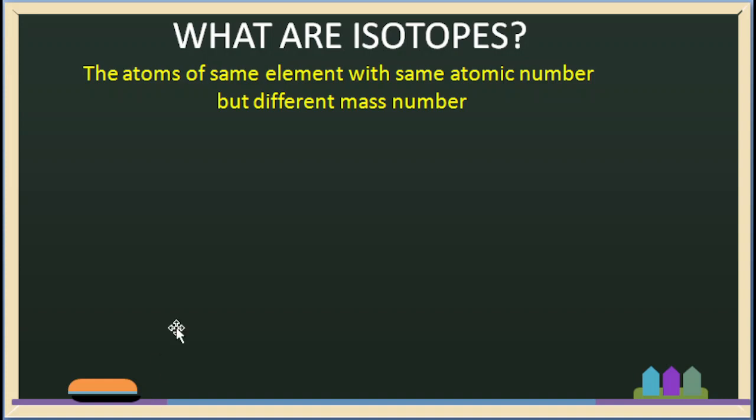Hello. Last video was called 'Atom' — atom properties: atomic number, number of electrons, number of protons, number of neutrons. Today we are going to talk about a very interesting topic. The topic is isotopes.